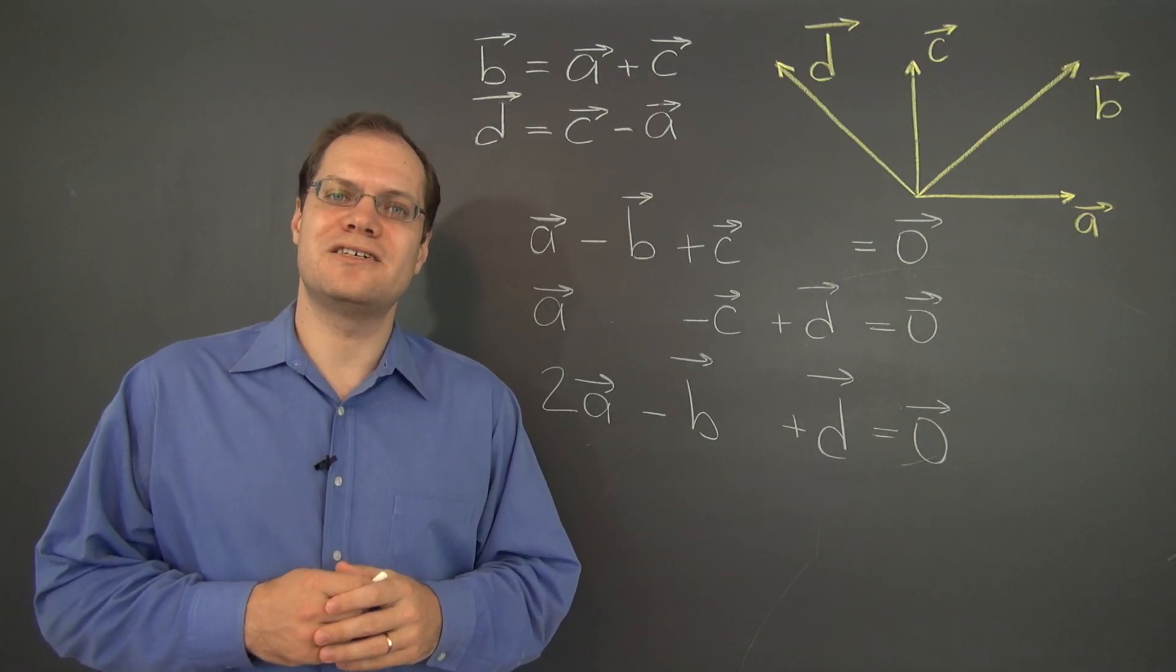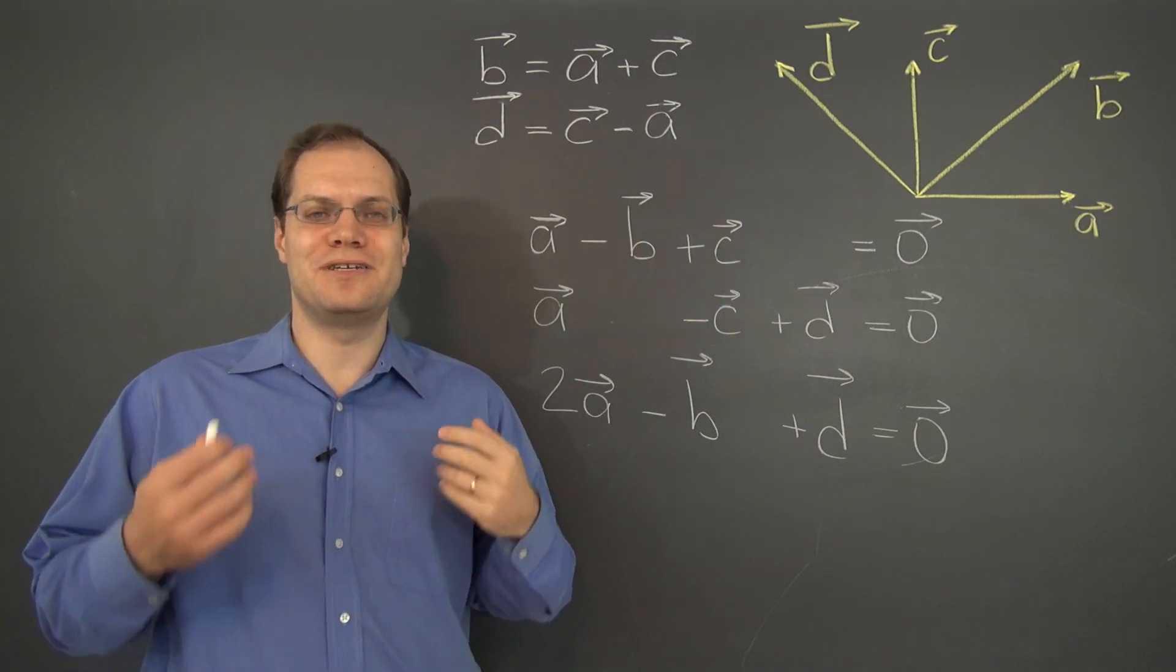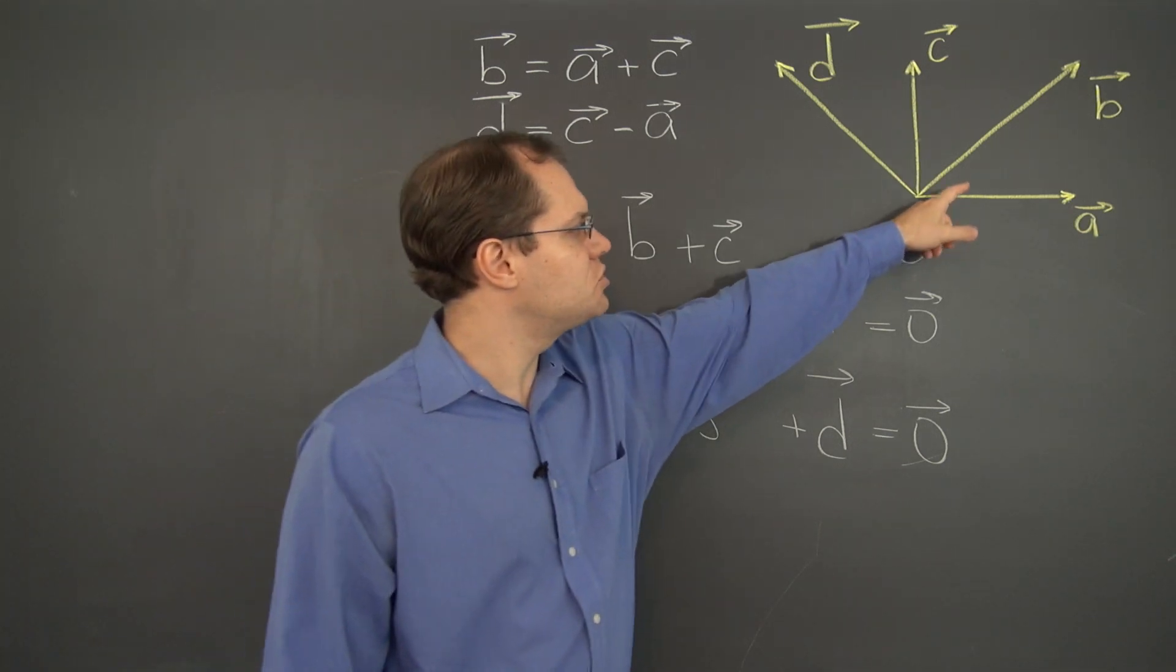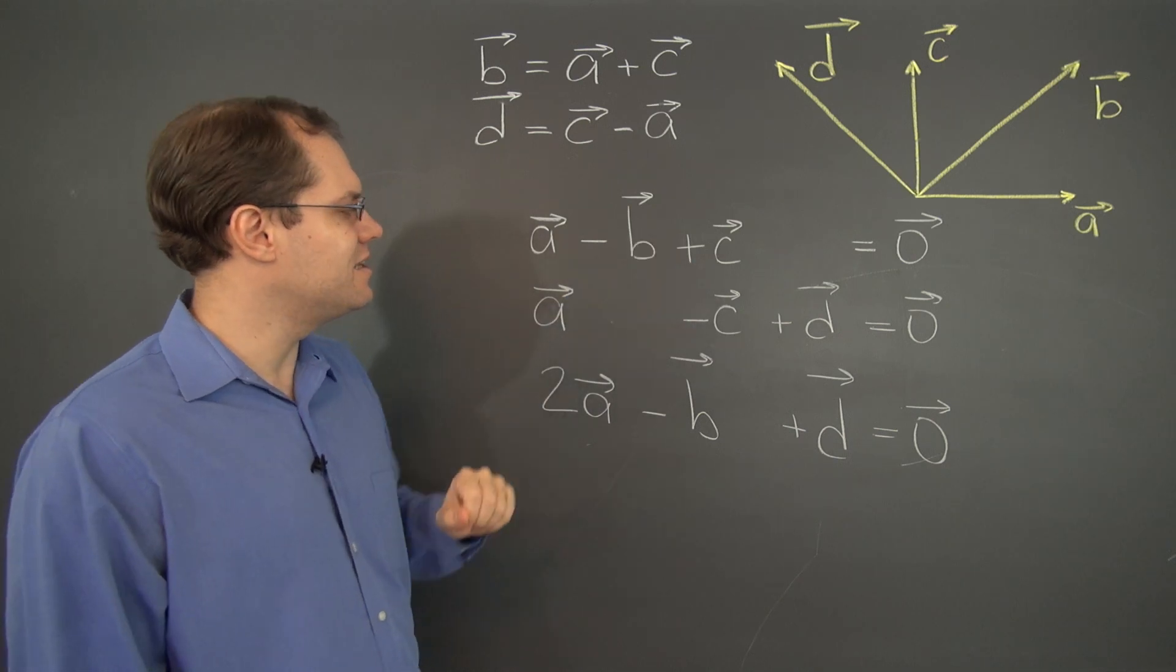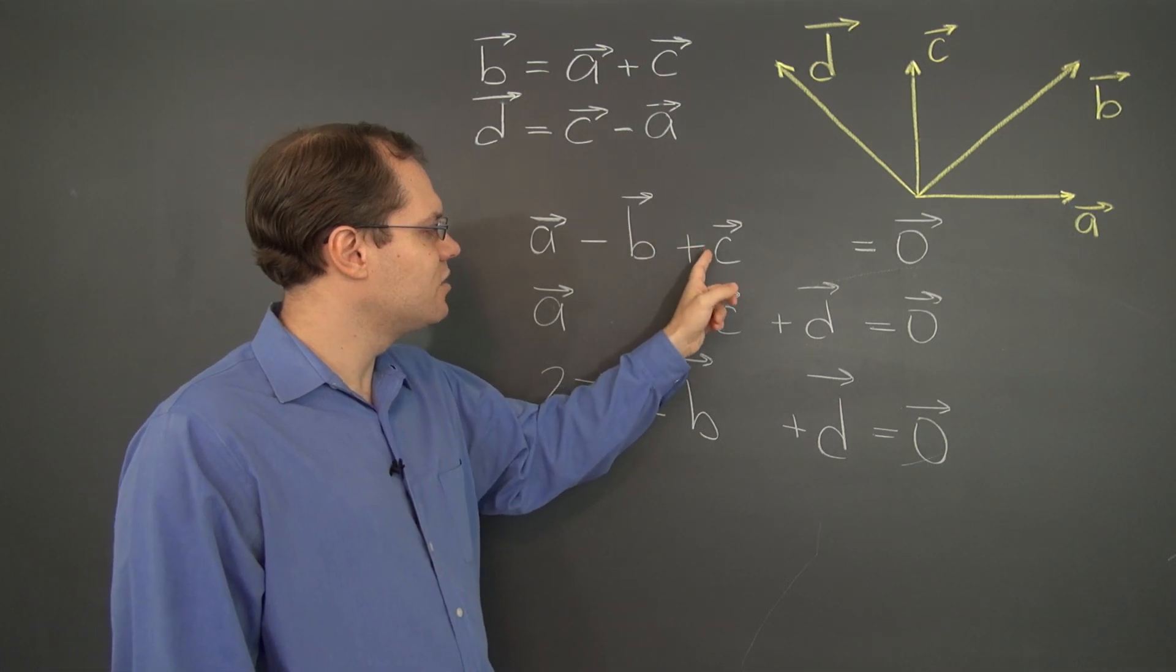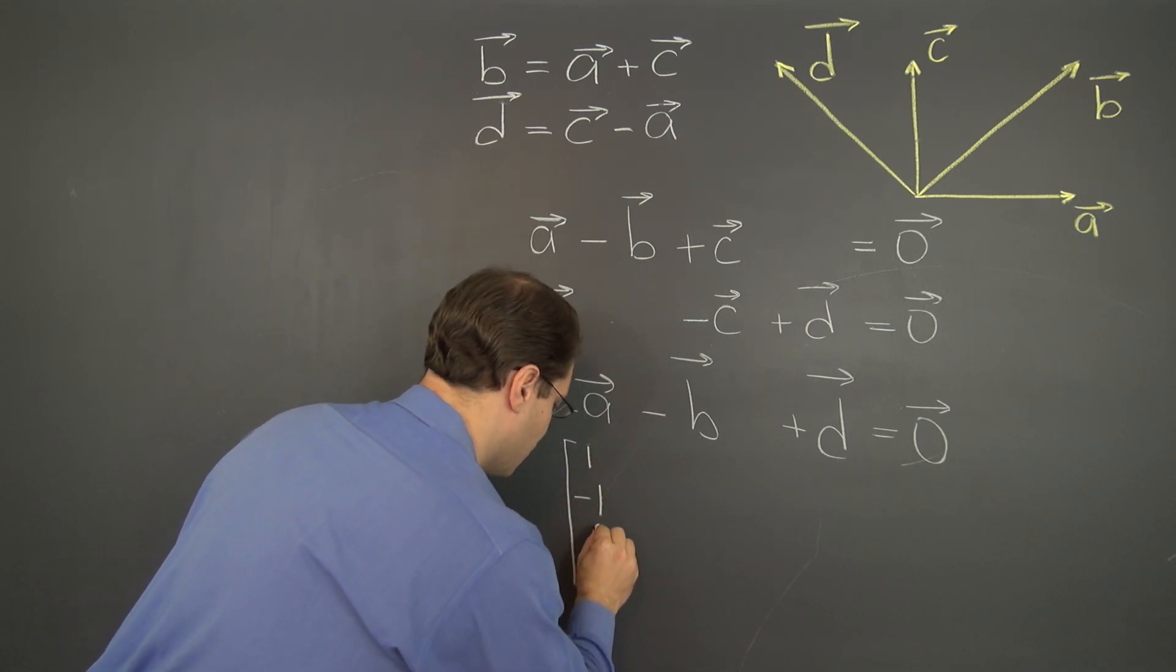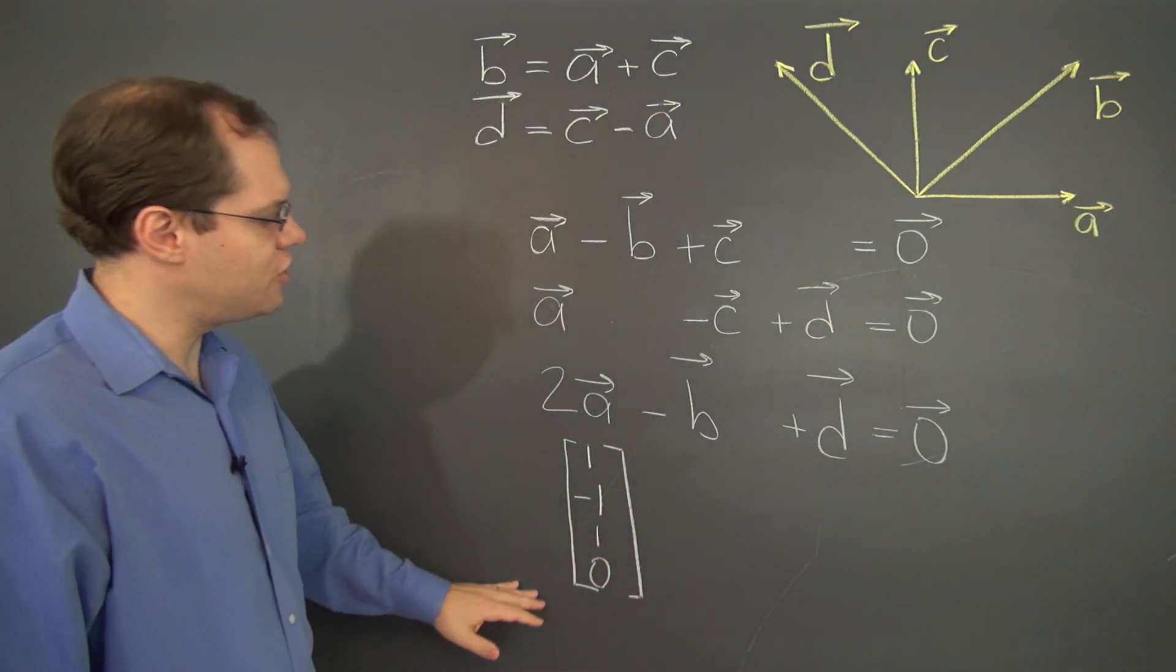And of course, linear combinations are fundamentally about the coefficients. So, we can't help but associate a linear combination with an element from R4, a set of four numbers, one for each one of the vectors from the ordered set of vectors. So, for instance, this linear combination would be associated with the element 1, negative 1, 1, 0. So, let's write it right here, 1, negative 1, 1, 0. A perfectly good element from R4.